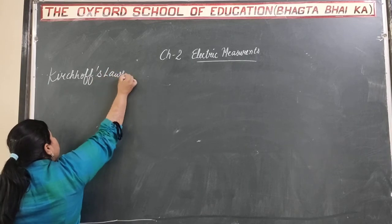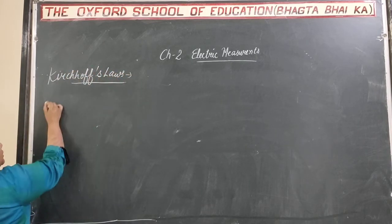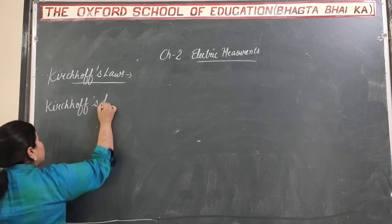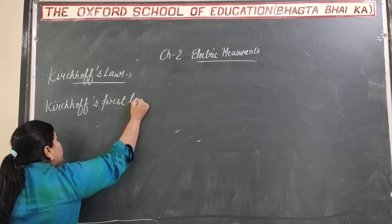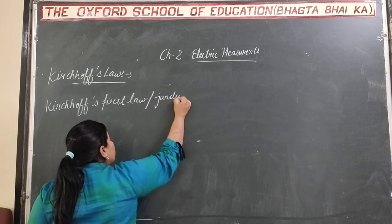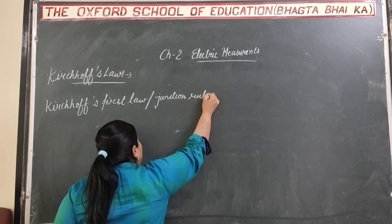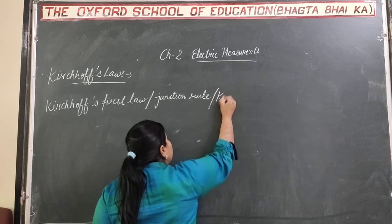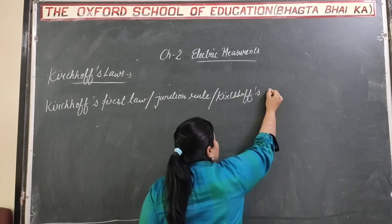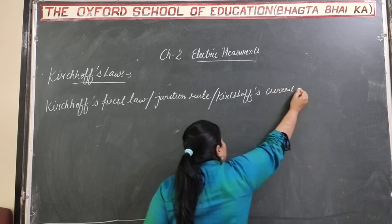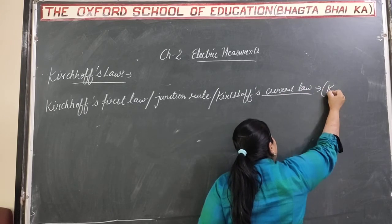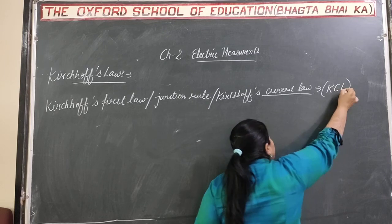There are two laws given by Kirchhoff. First, we will discuss Kirchhoff's first law. This law is also known as the Junction Rule. It is also known as Kirchhoff's Current Law, or in short form, KCL.